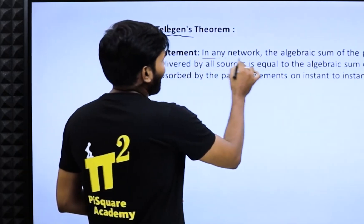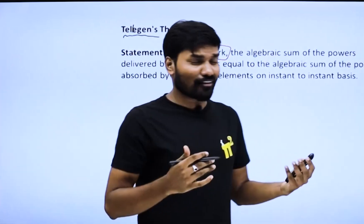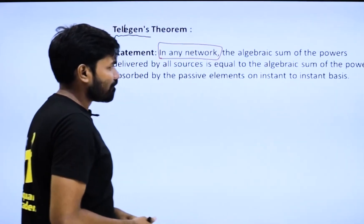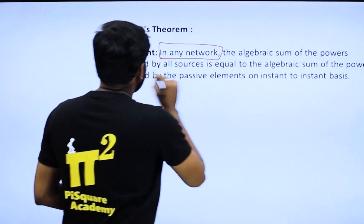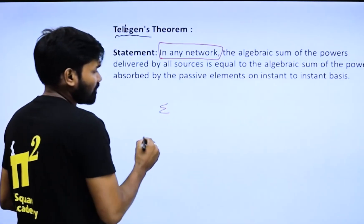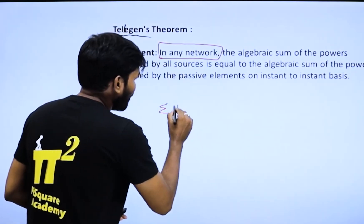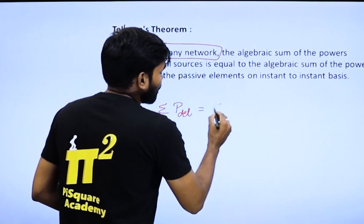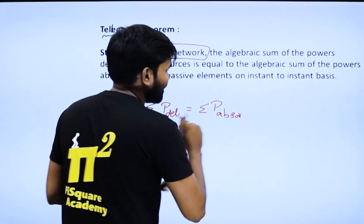This theorem is valid for any kind of network: linear, non-linear, unilateral, bilateral, time-variant, time-invariant — any network. What is it all about? This is simply about the algebraic sum of powers delivered. The algebraic sum, along with polarity, means sum of power delivered is equal to sum of power absorbed. That's it.